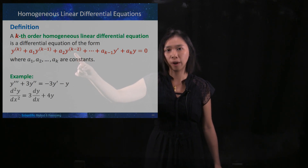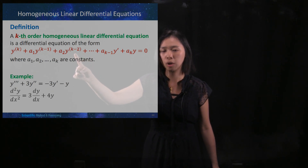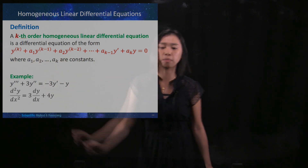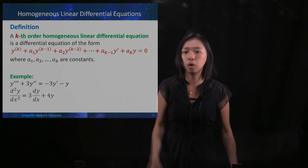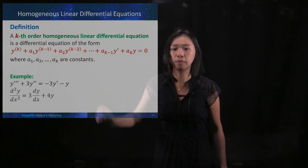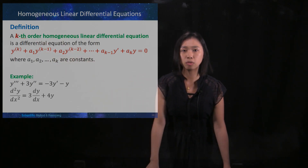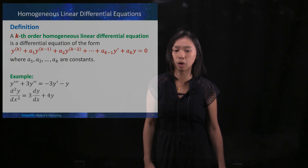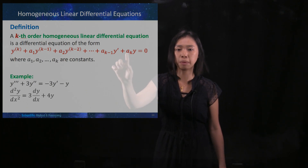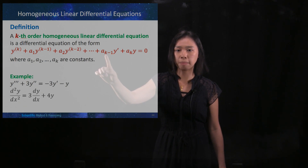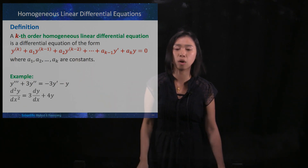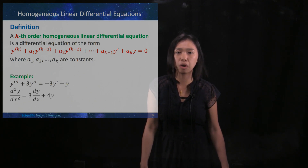Until here, we have y being differentiated k minus two times, k minus one times, and then k times — that is why we call this k-th order. All these y and its derivatives are being multiplied by constants: y is multiplied by a_k, y-dash is multiplied by a_{k minus one}, and so on. All these a_k's are constants, and that is why we call it linear.